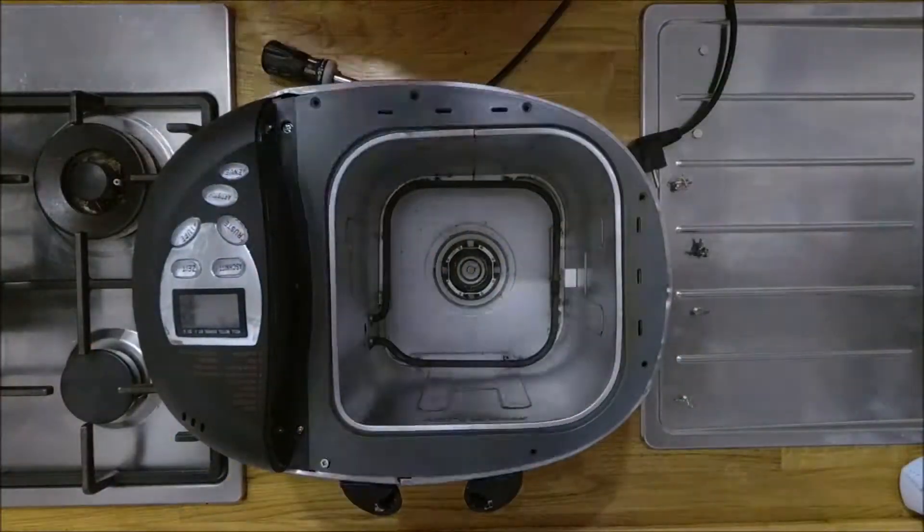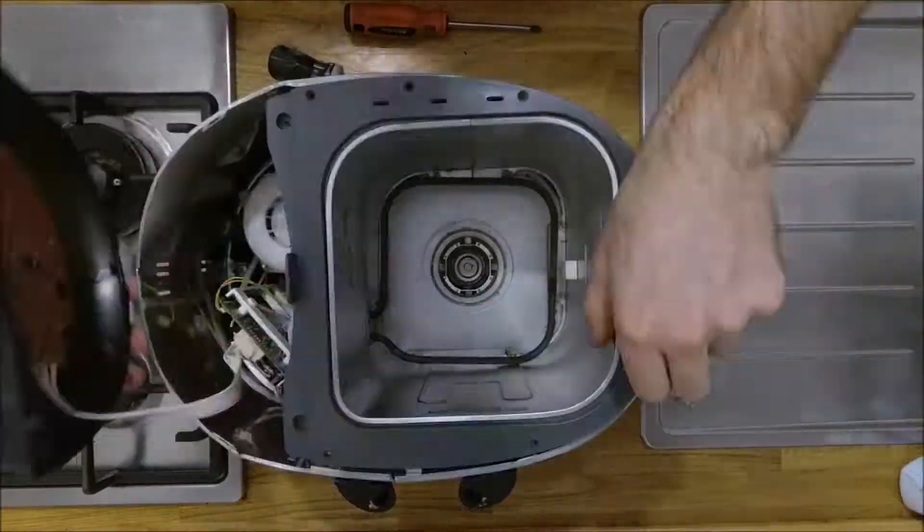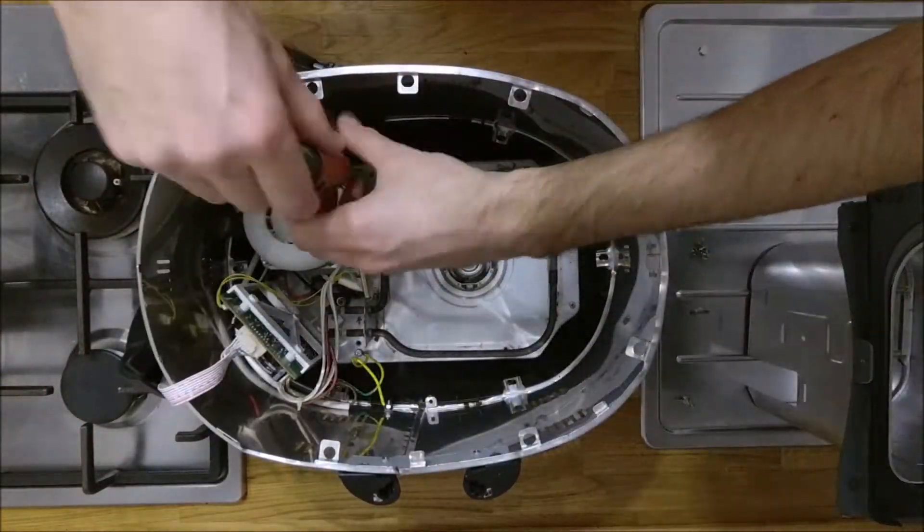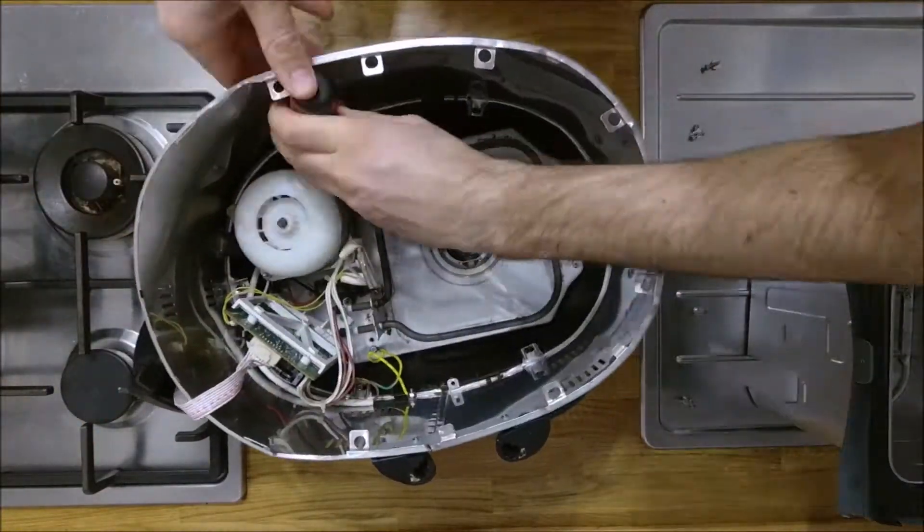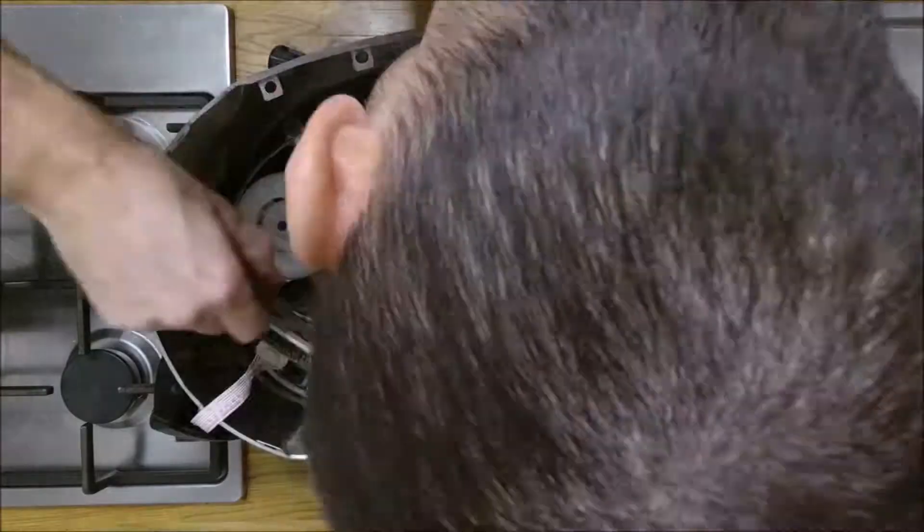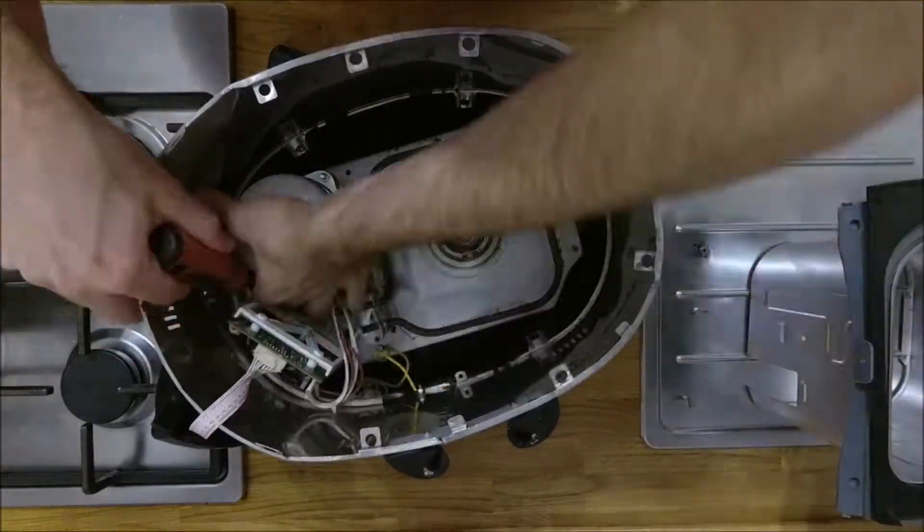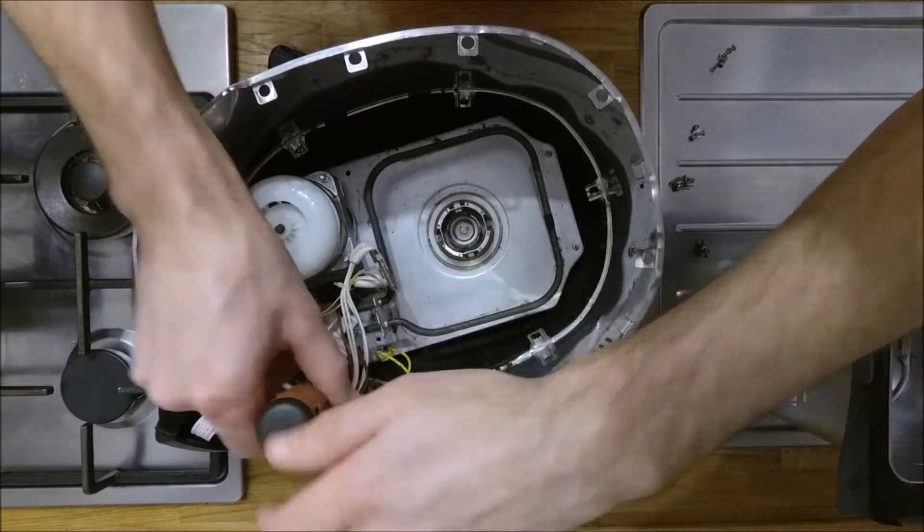Next, remove the electronics panel. There are three screws holding that in place, then you can lift it all out. Once the heat shield is removed, you'll have access to all the screws that hold the base down to the plastic of the bottom of the machine.